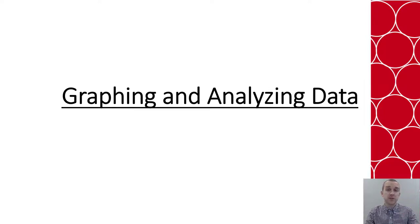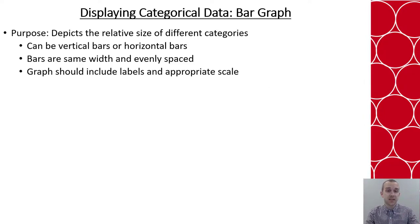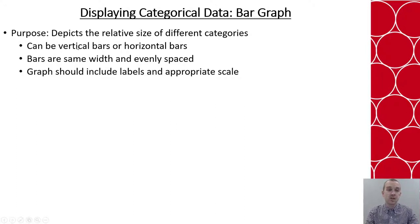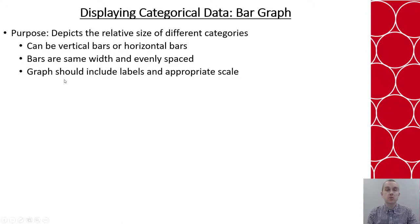In this video we will discuss graphing and analyzing data. When talking about categorical data, one of the most common ways we will graph it is through a bar graph. The purpose is to depict the relative size of the different categories. We can use vertical or horizontal bars, but they need to be uniform — the same width and evenly spaced. The graph should also include, whenever possible, labels and an appropriate scale of the data.